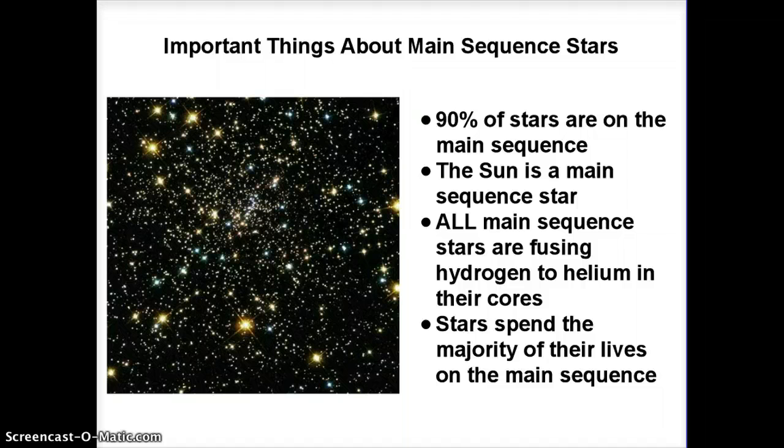The fundamental characteristic of main sequence stars that unites all of them is that they are all fusing hydrogen to helium in their cores. We're going to see that other stars may fuse different things in their cores, or they may fuse hydrogen to helium somewhere else other than their core. But main sequence stars have in common that they are all fusing hydrogen to helium in their cores.